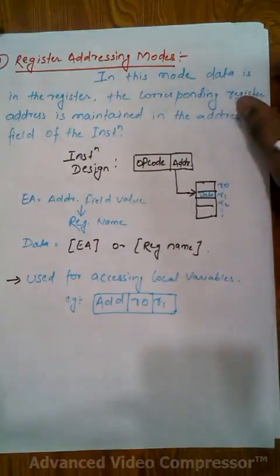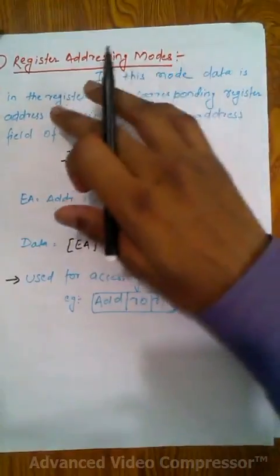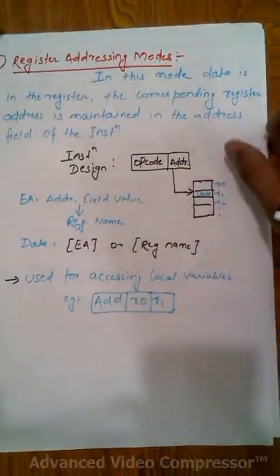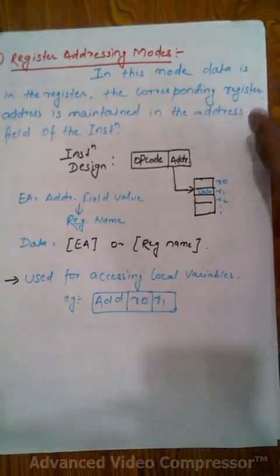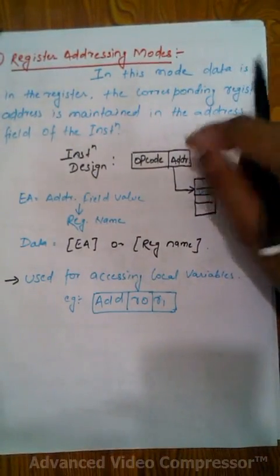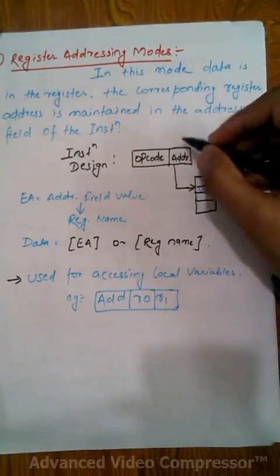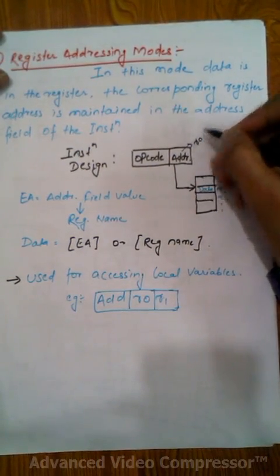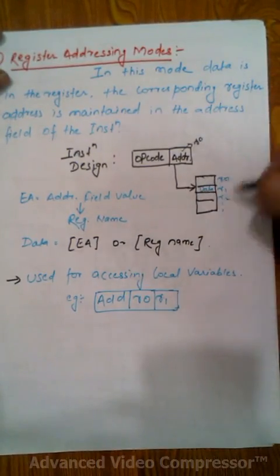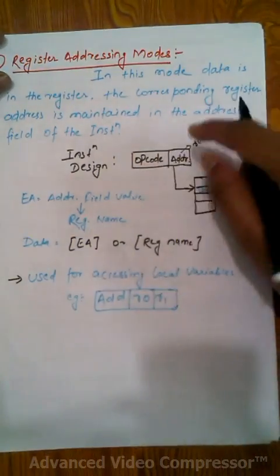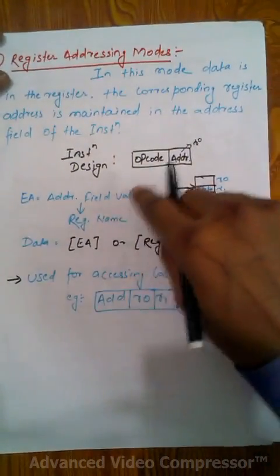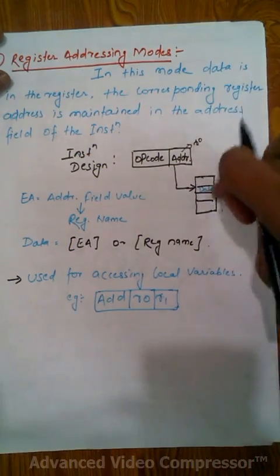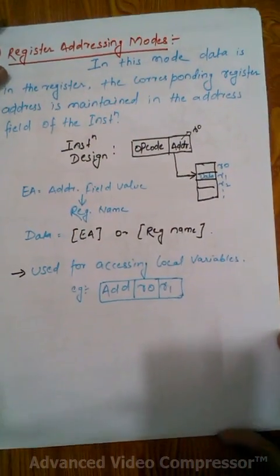The first is register addressing mode. In this mode, data is in the register and the corresponding register address is maintained in the address field of the instruction. The instruction has an opcode and address field. This address field gives the register name — R0 or R1 — and according to that, data will be present in that register.